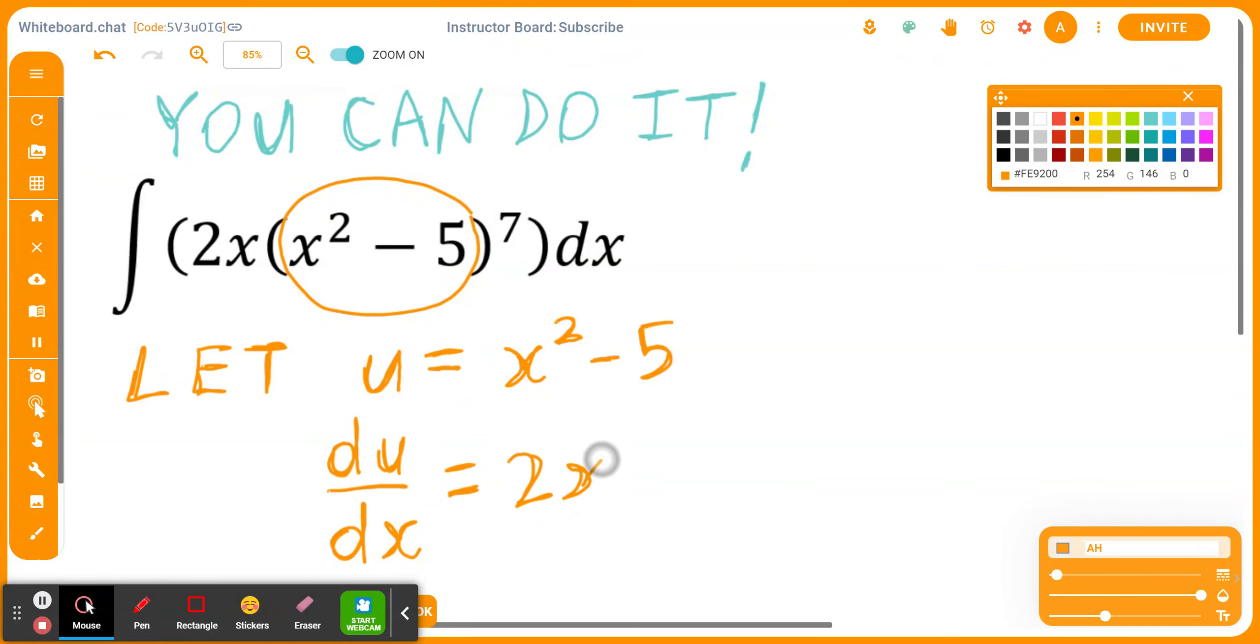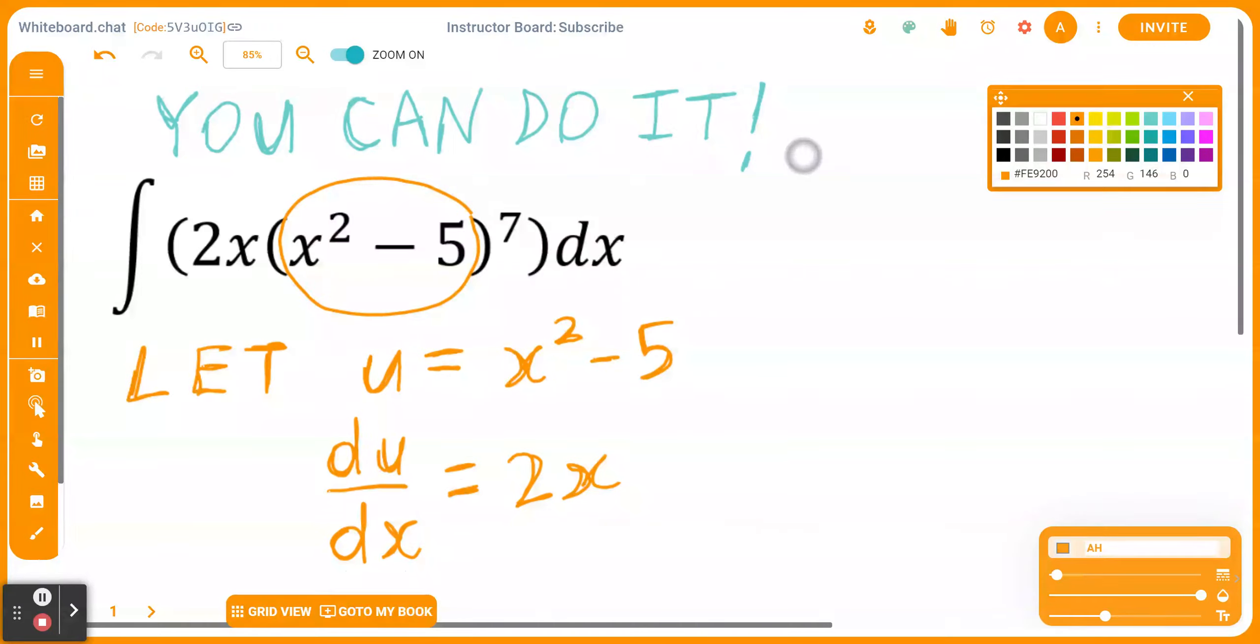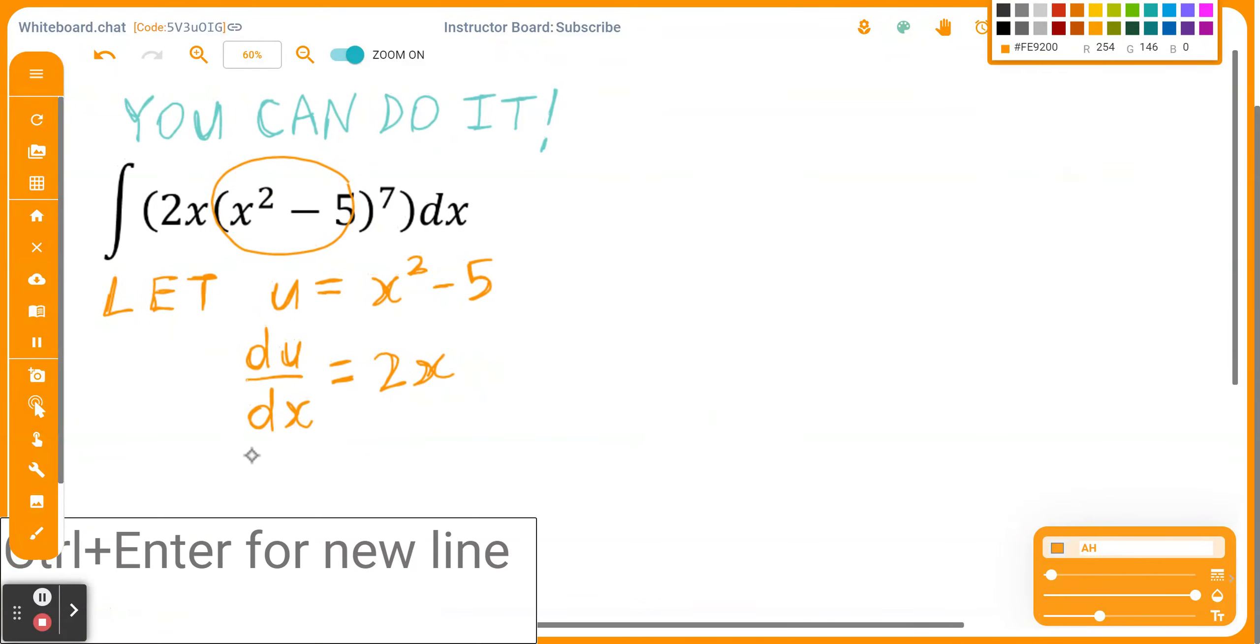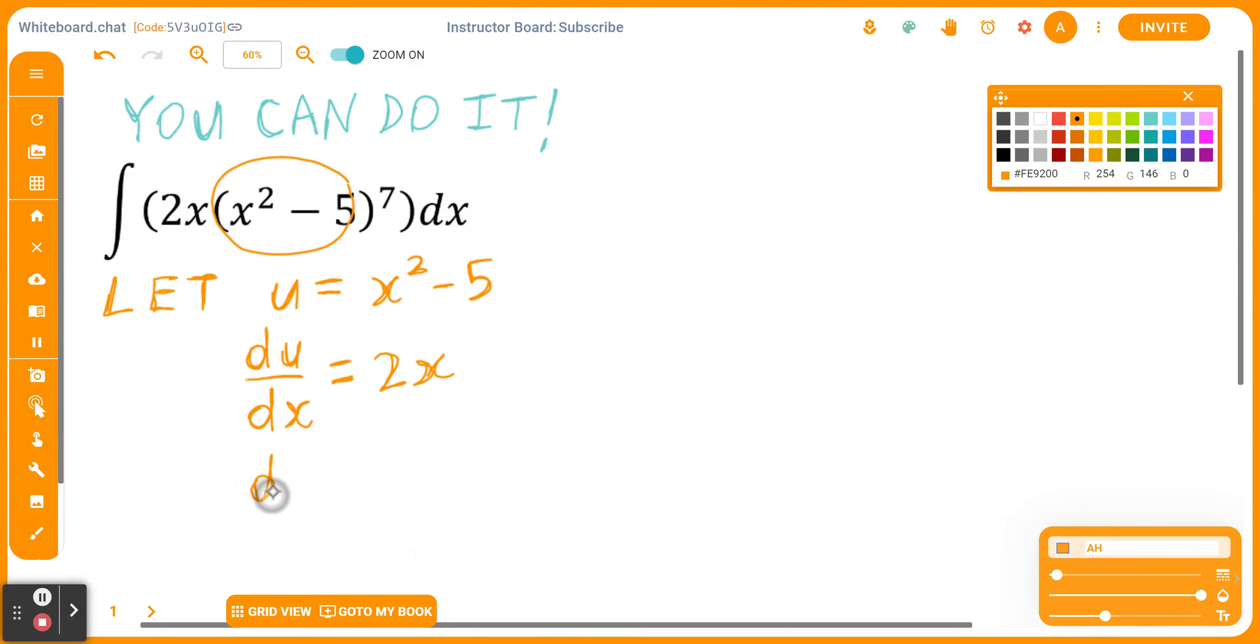And again, if you isolate for 2x, I'll write it right here. Let's move it up a little bit for you. There you go. So du equals 2x times dx.